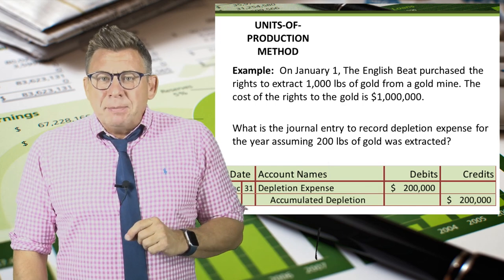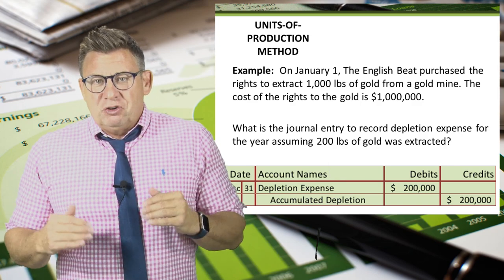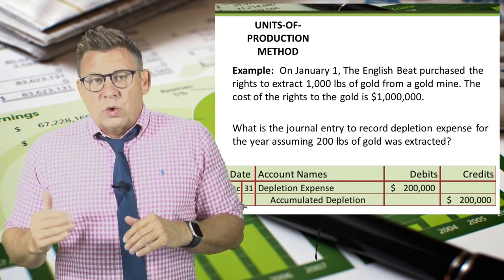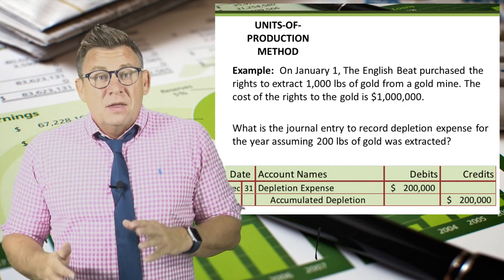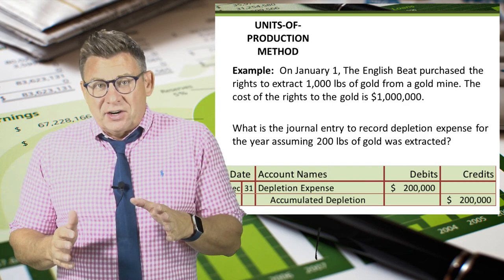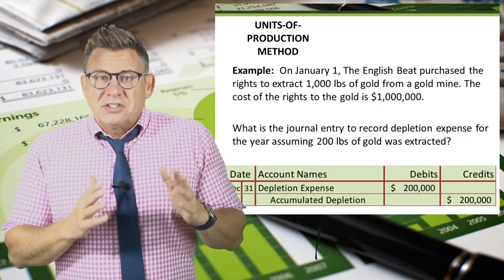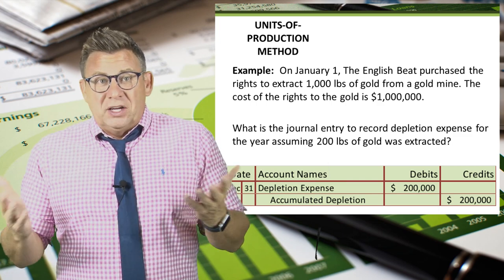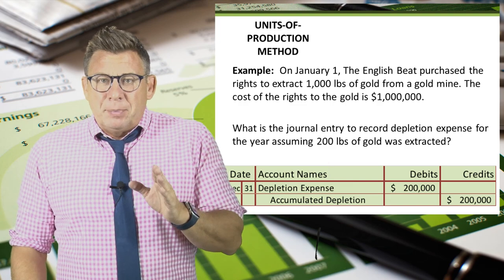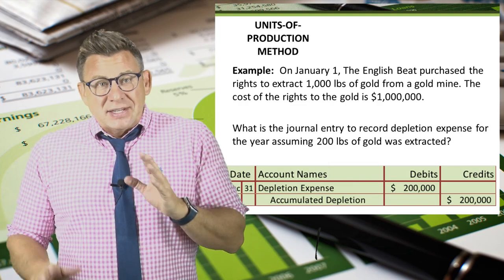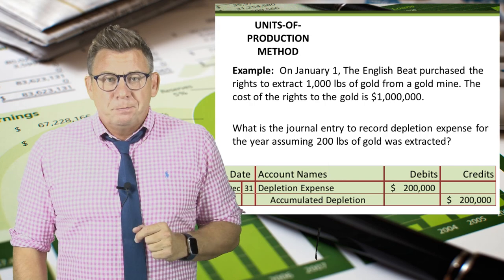Alternatively, some companies might use an accumulated depletion account rather than crediting the natural resource asset directly. This isn't necessary like it is with plant assets, since the natural resource asset will be gone once it's fully depleted. But some companies and some textbooks might choose to do this, so it's best to be aware.